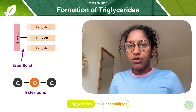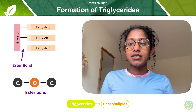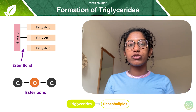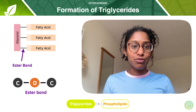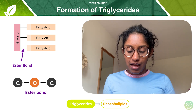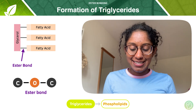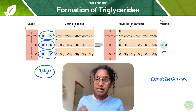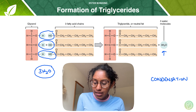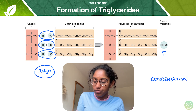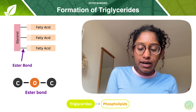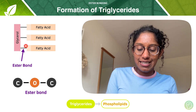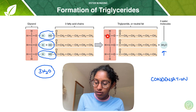We've formed our triglyceride — and what is that bond that we formed? That bond is called an ester bond. Flipping back to the previous slide, this here is our ester bond, and that's formed between our glycerol and our fatty acids.